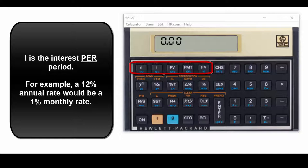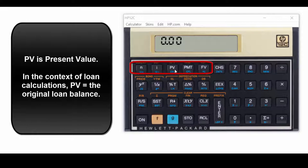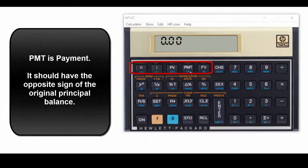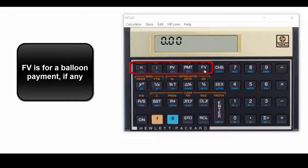I is the interest per period. So if we're given an annual rate and we're trying to calculate a monthly payment, we'll have to divide the annual rate by 12 to get the monthly interest. PV stands for present value. In this context, that's the original loan amount. PMT stands for payment—that means the monthly payment. And FV stands for future value. If there were a balloon payment, we'd use that key.